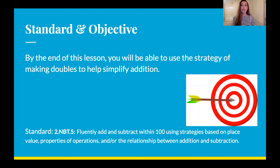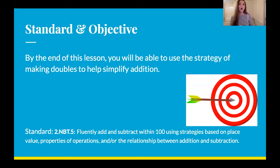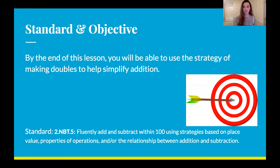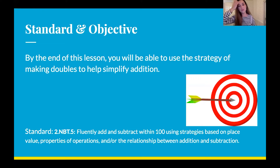Before we actually get into the lesson, we are going to talk about our standard and our objective. I like to go over this because when we do, you know exactly what you should be able to do and learn. Our objective is what you should be learning, and it says: by the end of this lesson, you will be able to use the strategy of making doubles to help simplify addition. We'll check back in with that at the end and see how you guys feel.